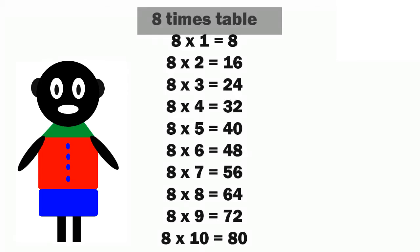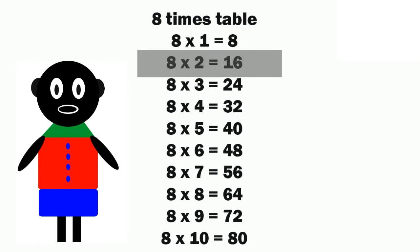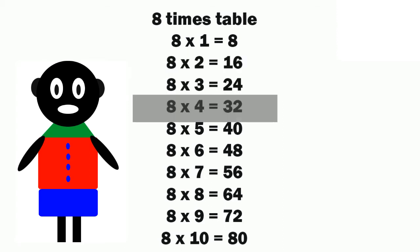8 times table. 8 times 1 is equals to 8. 8 times 2 is equals to 16. 8 times 3 is equals to 24.